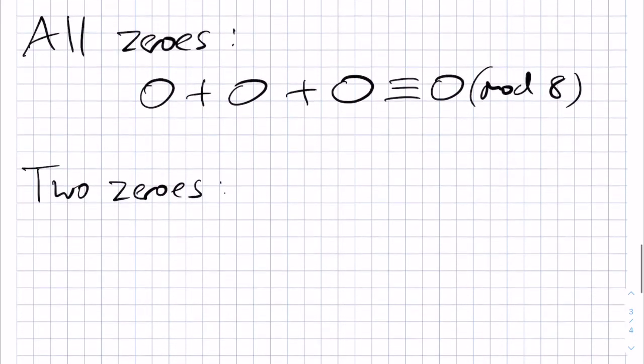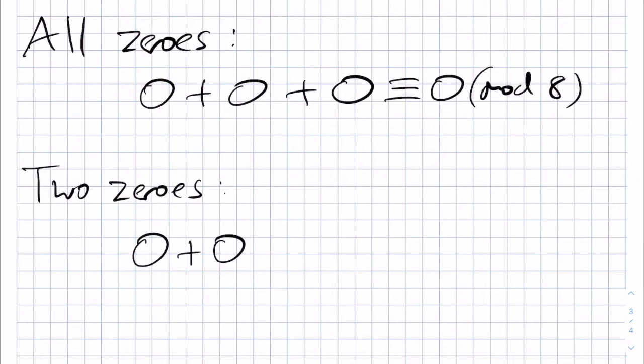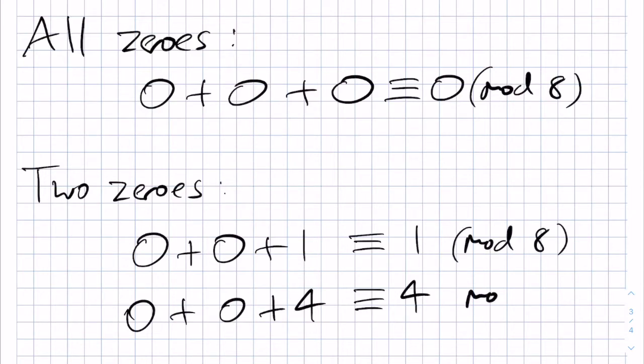This has the two possible situations, 0 plus 0 plus 1, or 0 plus 0 plus 4. The first one is congruent to 1, and the second one is congruent to 4, both modulo 8. You may wonder why we don't consider permutations, like having the 1 being here instead, and then the two 0s. But by symmetry, if these don't work, then they won't work in the other permutations, where we just swap the order of x, y, and z.